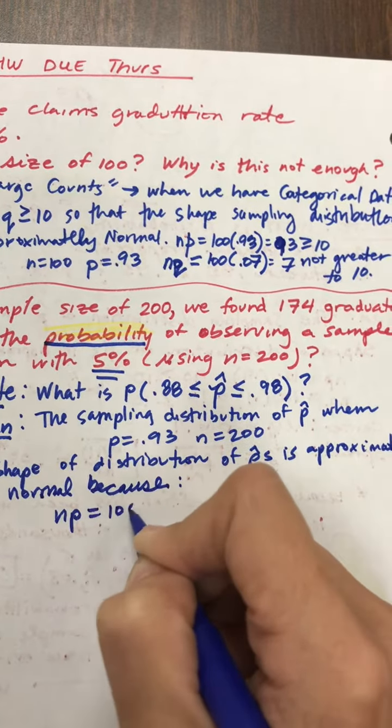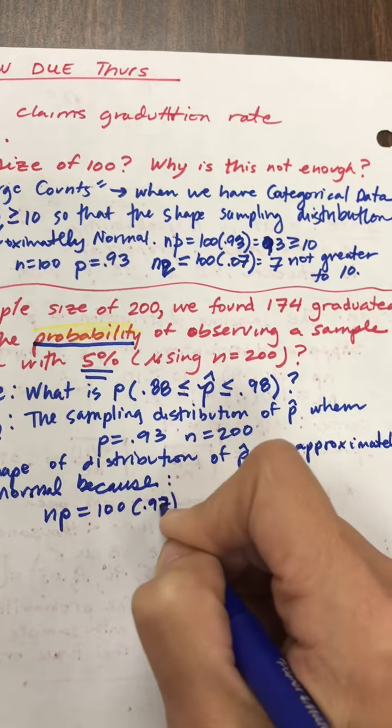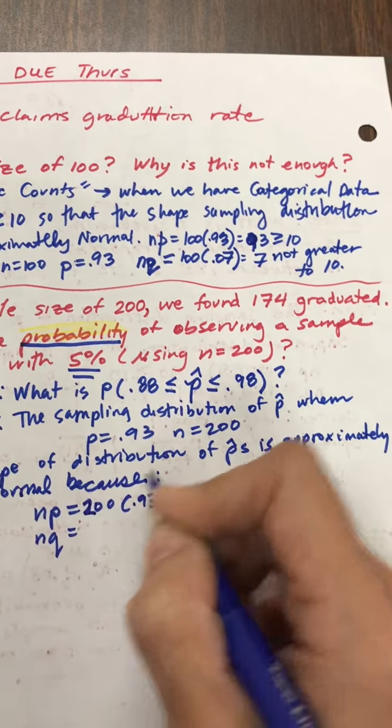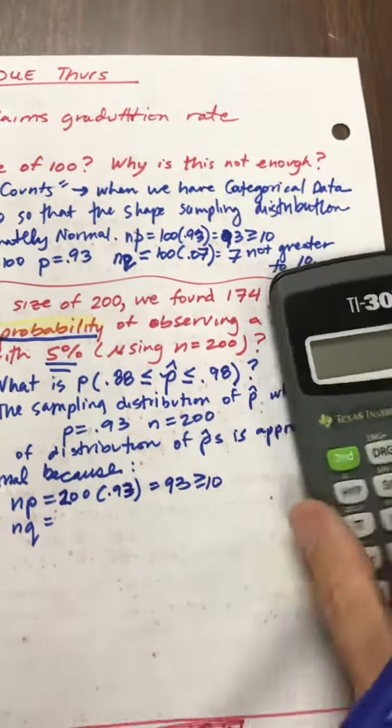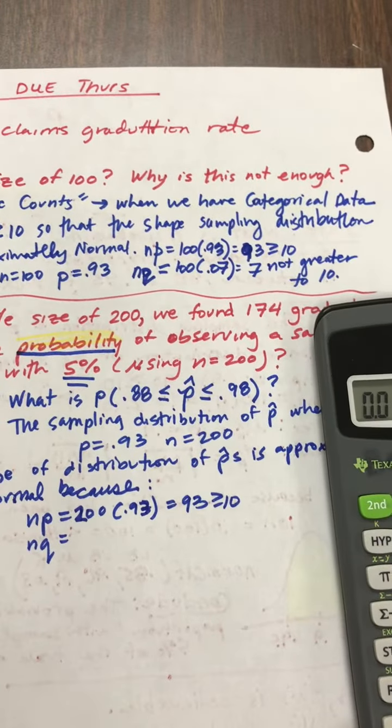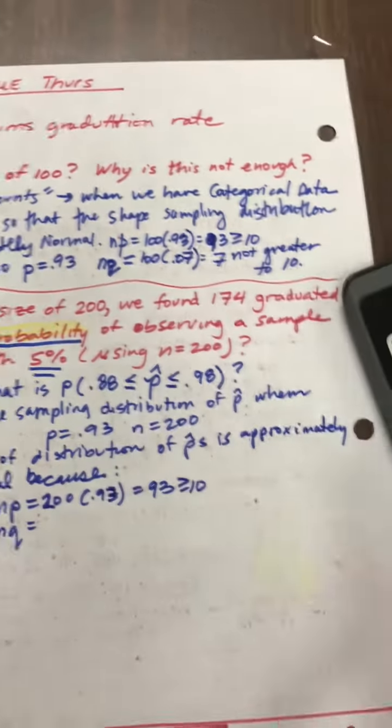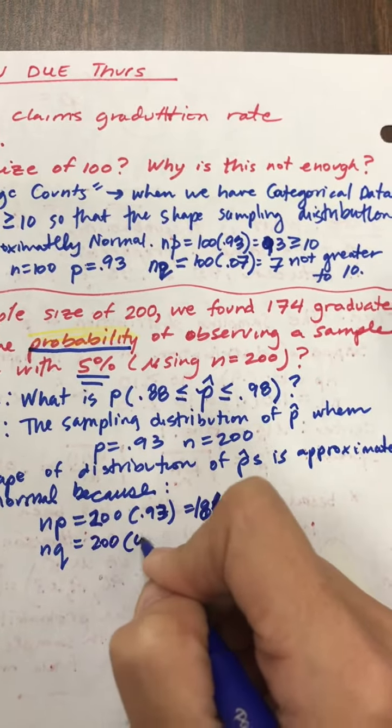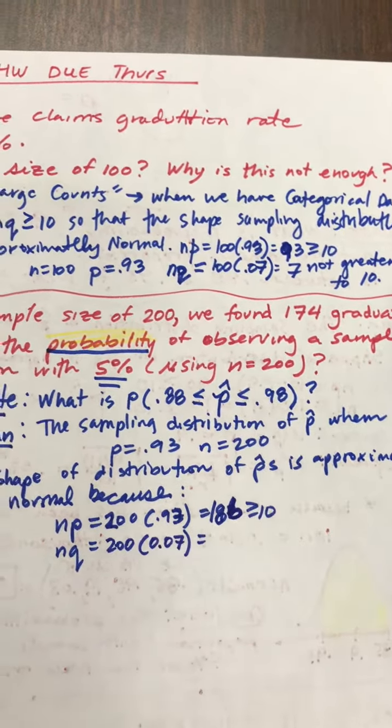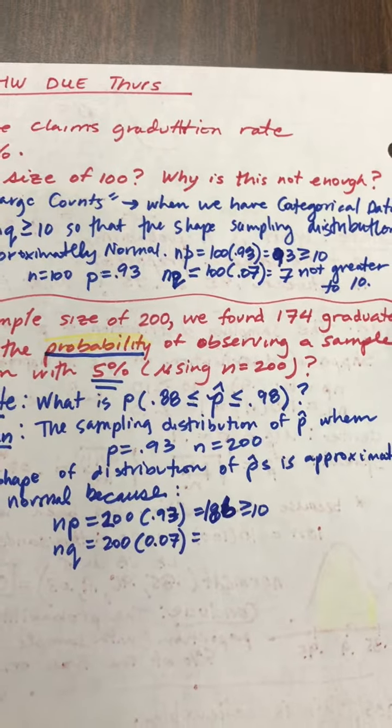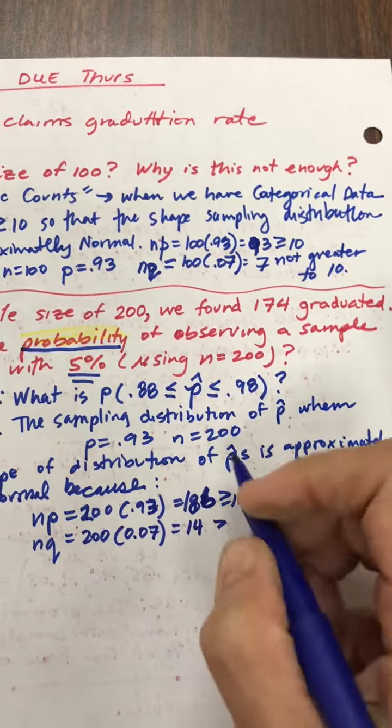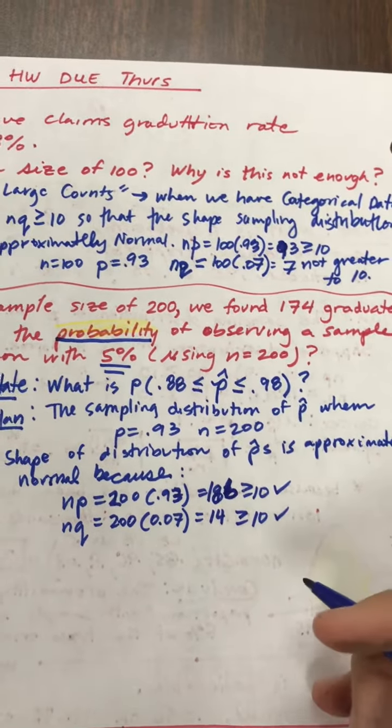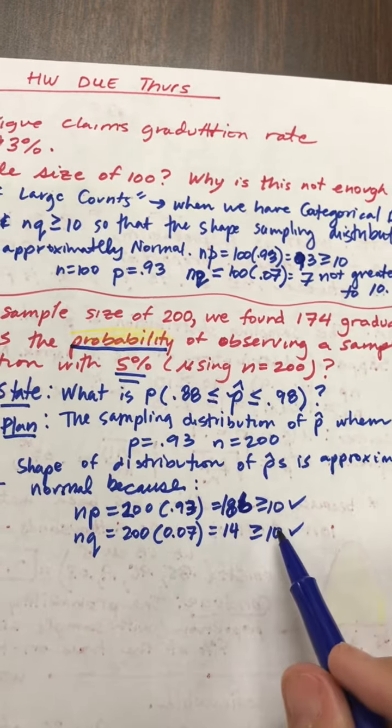Here we do N times P, and now we have 100 times 0.97, or excuse me, 0.93, so that's 93, and that's greater than or equal to 10. And N times Q, oops, I want to do 200. Oh, I got to change, right? I changed the facts here. So that would be 93 times 0, right? 186. So they did change the problem a little bit. And now N is 200, and then that's 0.07. So 200 times 0.07. So I'm expecting only 14 people not to graduate, and aha, that is greater than or equal to 10. So the law of large counts has been met.